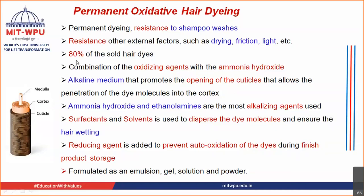80% of hair dye systems used are permanent oxidative hair dyeing system, whereas 20% are temporary, semi-permanent, or demi-permanent. It is a combination of oxidizing agent — that's why it is called oxidative hair dyeing system. The oxidizing agent basically used is hydrogen peroxide, used along with an alkaline medium. The alkaline medium usually used is ammonium hydroxide.